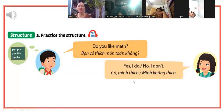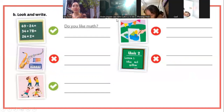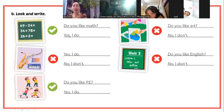Bây giờ chúng ta qua làm bài tập mẫu câu. Look and write. Nhìn hình và viết. Đây là môn toán thì các bạn hỏi "Do you like math?" Bạn có thích môn toán không? Đánh dấu tích thì các bạn trả lời Yes, I do.